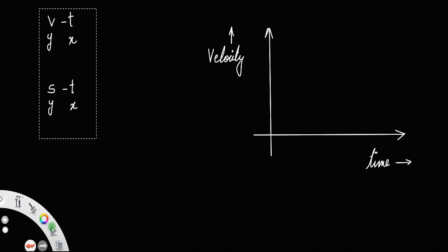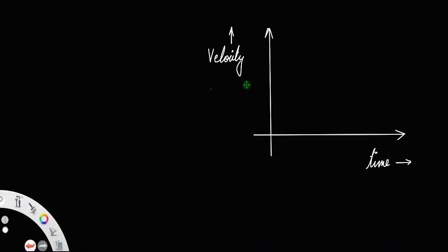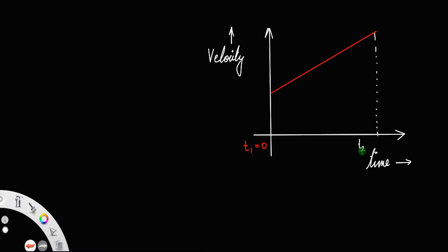Now, back to the derivation. For a body moving with uniform motion — uniform motion means the acceleration of the body is constant — the plot will be a straight line inclined with the x-axis. This graph is inclined to both axes. We take the time t1 at the origin, so the time will be 0, and after a particular time t2, we take t2 as time t.